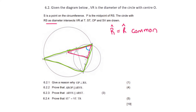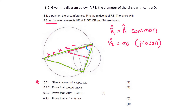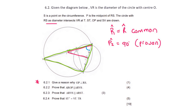We know that this angle here is already 90 degrees — we've already shown that in question 6.2.1. So angle P2 equals 90 degrees, and that's already been proven. Now if you look at the green triangle, we've got a diameter, and a diameter always makes a 90-degree angle on the circumference — that's angles in a semicircle. So angle VSR equals 90 degrees, because of angles in semicircle.